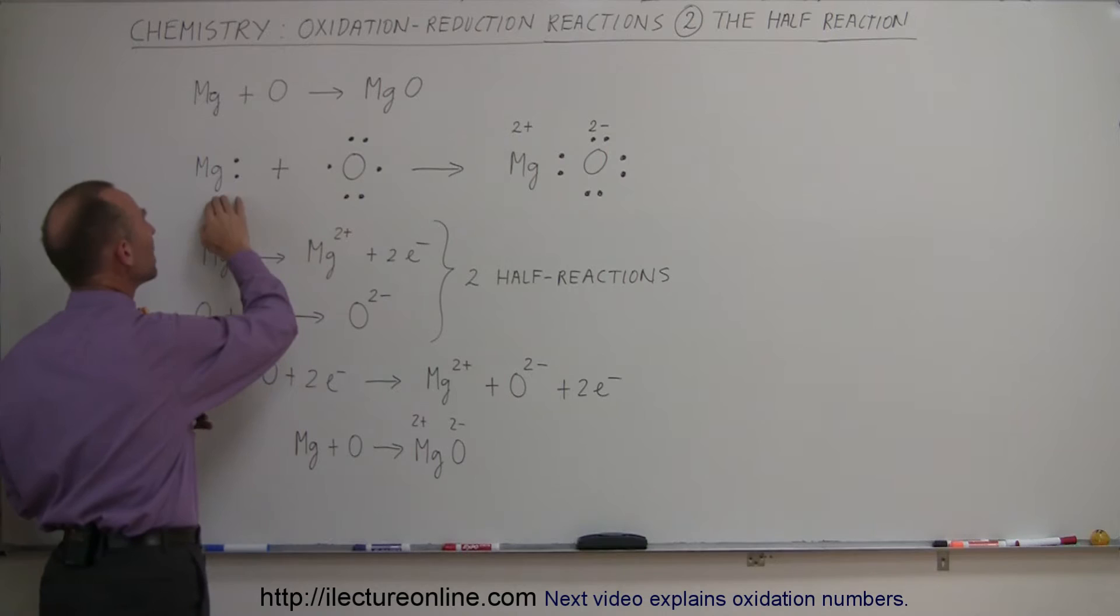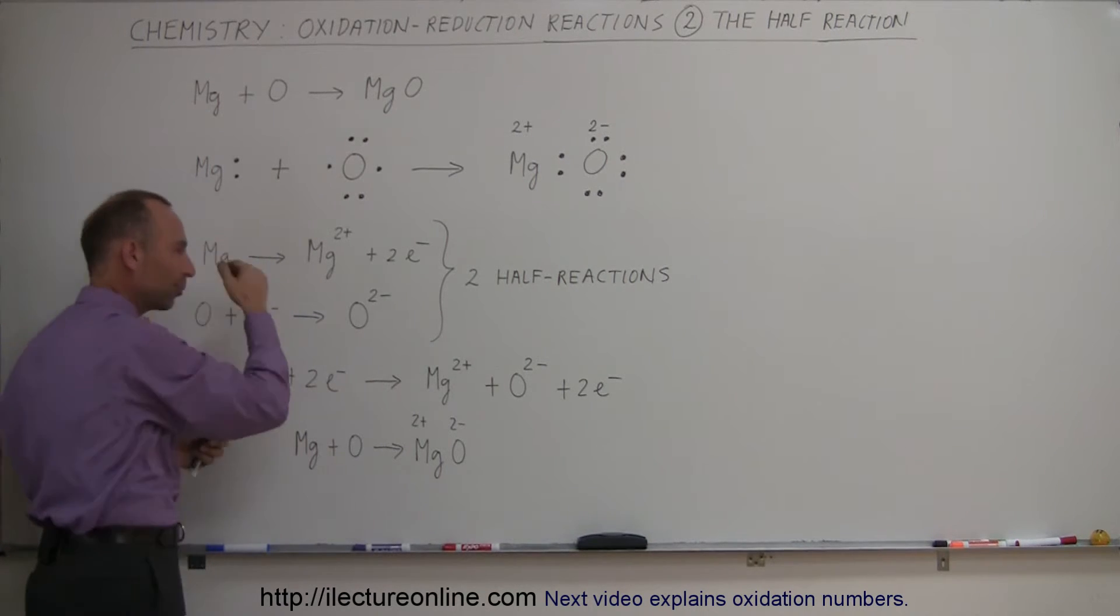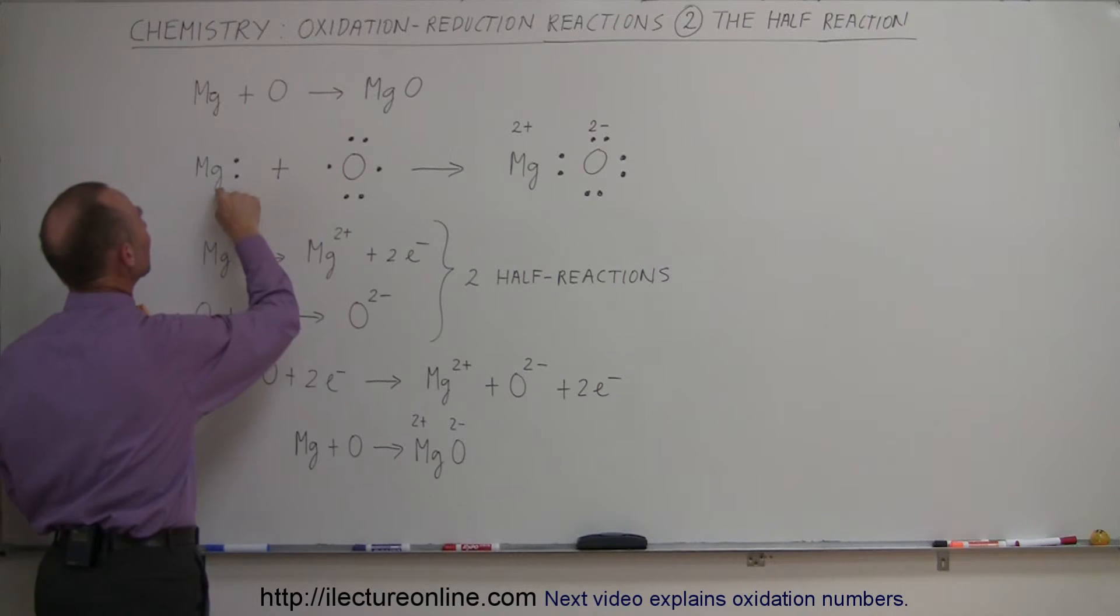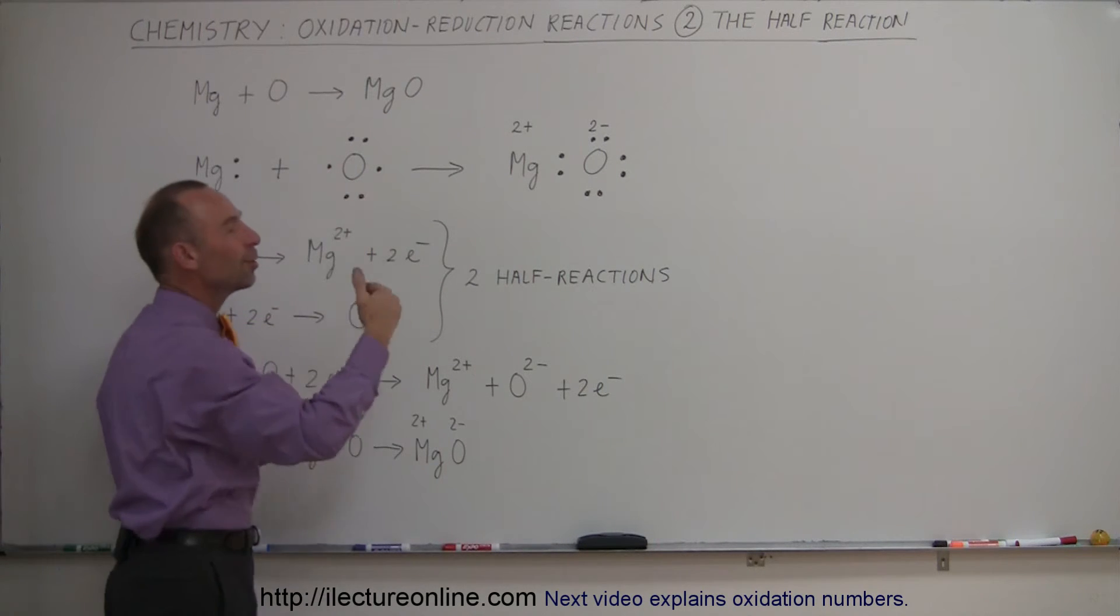Oxygen causes magnesium to be reduced and to be, I'm sorry, to be oxidized. Whoa, now we have to be careful here. This is the oxidizer, this is the reducer. So, oxygen causes magnesium to be oxidized and magnesium causes oxygen to be reduced.